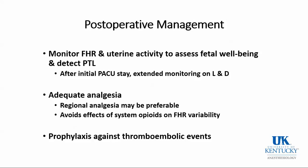Postoperatively, these patients need adequate analgesia like everyone else. Regional analgesia may be preferable, avoiding the effects of systemic opioids on fetal heart rate variability. Finally, remember that pregnant patients are hypercoagulable and at higher risk of thromboembolic events, so prophylaxis is needed — sequential compression devices should be mandatory for all of these patients. Trauma patients or those after major surgeries who are not ambulating much may also benefit from low molecular weight heparin prophylaxis. That is an overview of considerations when providing anesthesia for non-obstetric surgery in the pregnant patient.